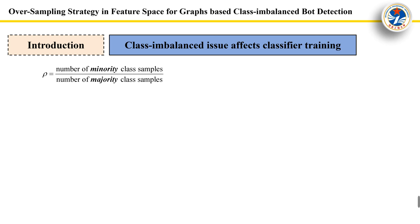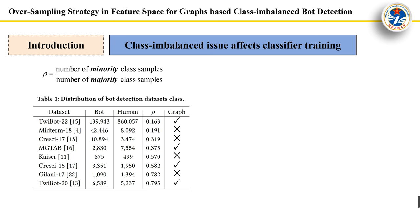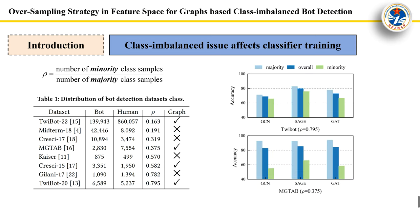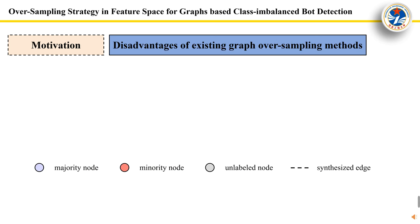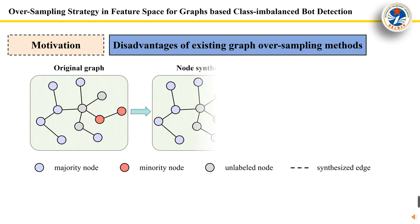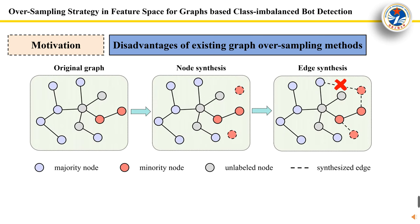Define RU as the Class Imbalance Ratio. As shown in Table 1, all bot detection datasets suffer from a certain degree of class imbalance issue. Imbalanced data distribution can affect the model training, causing the model to tend to classify samples as the majority class, resulting in lower detection accuracy for the minority class.